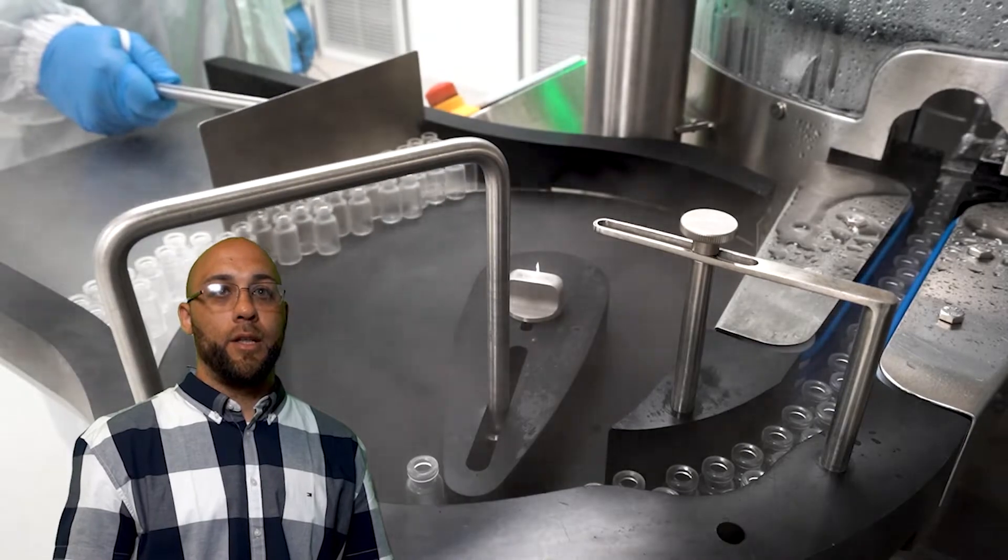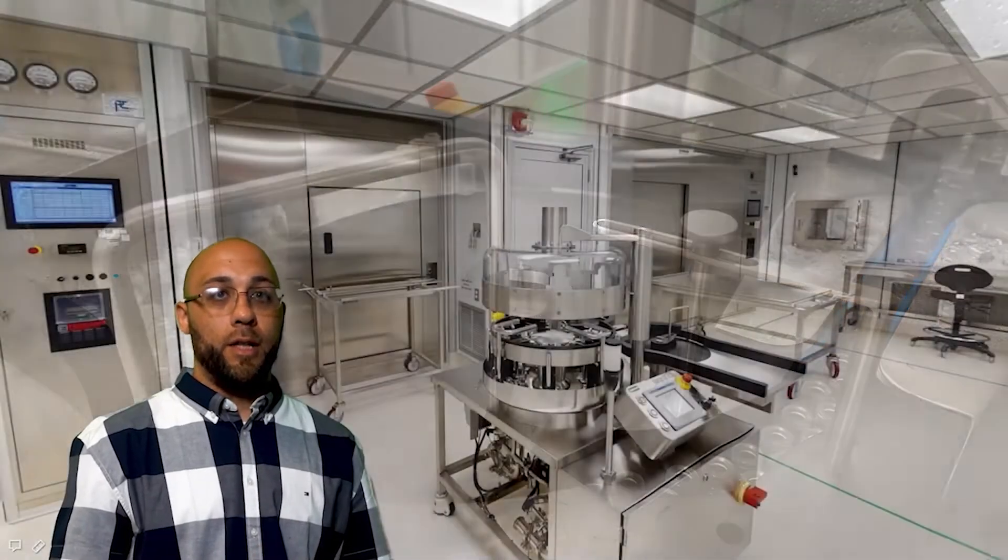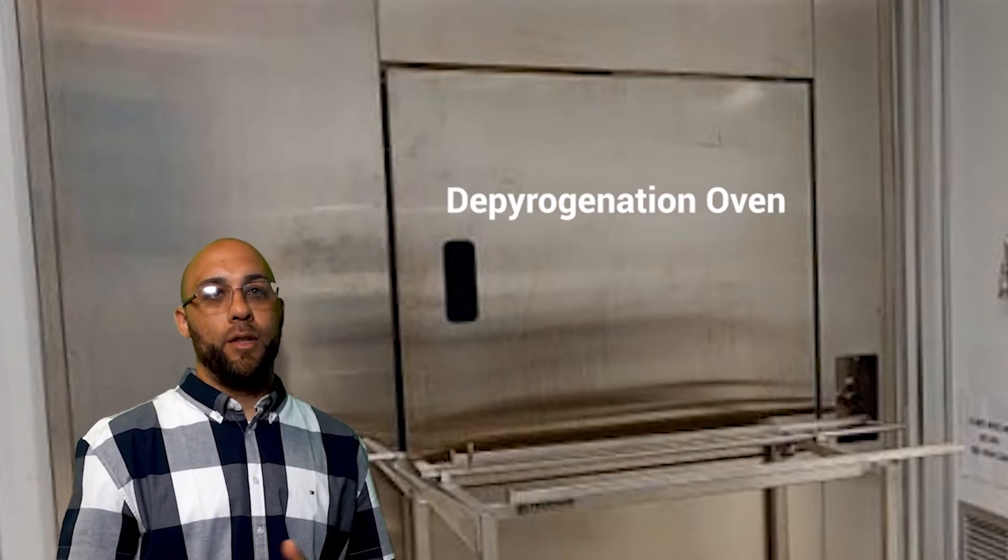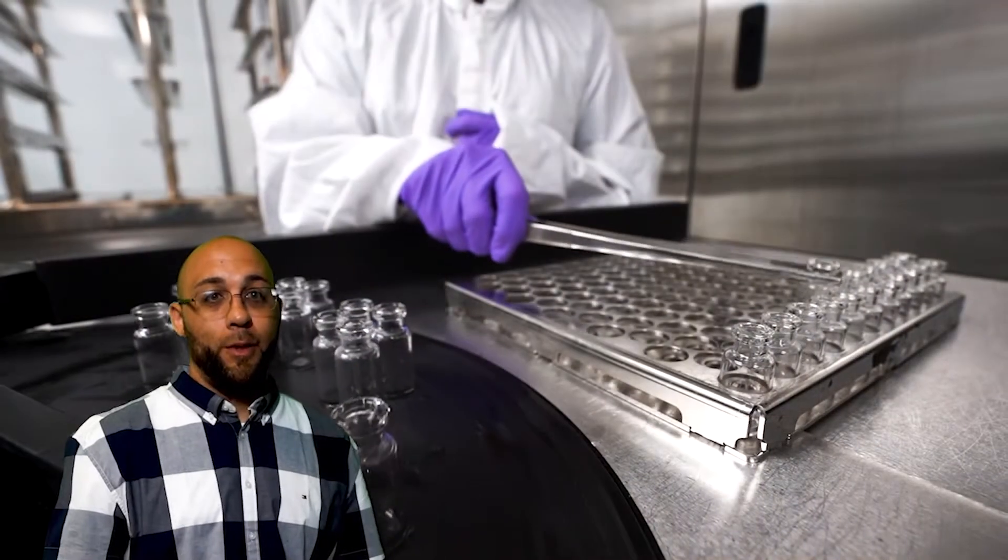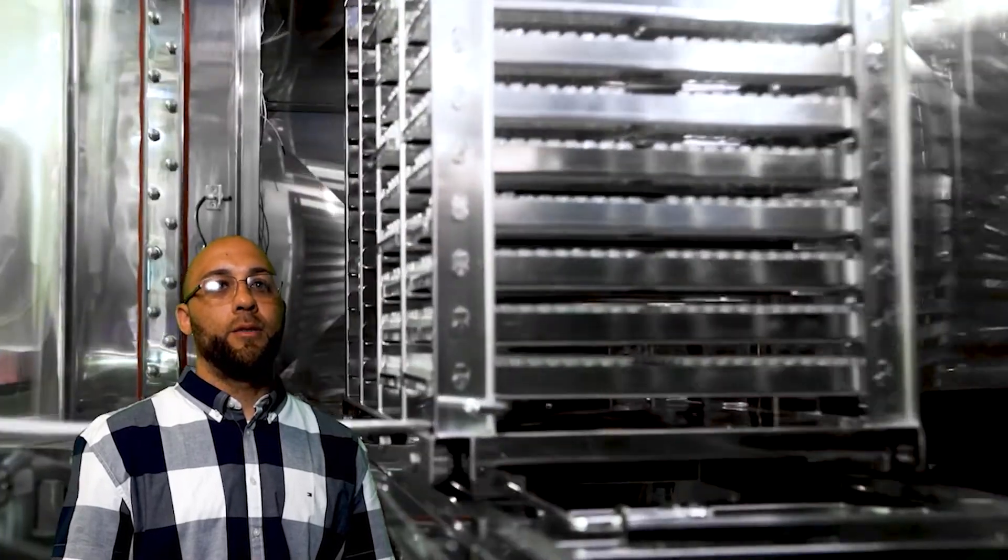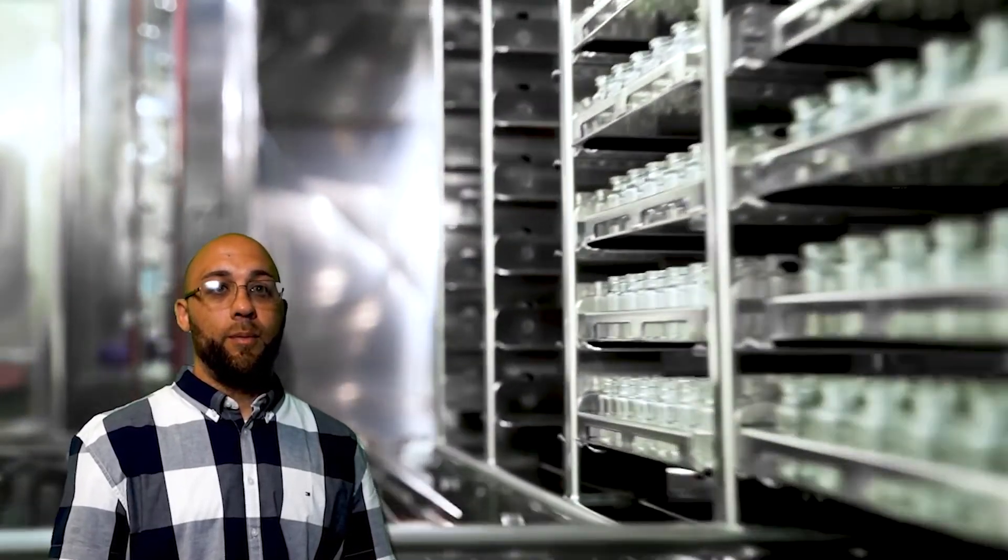We also wash and sterilize vials here. The vials enter the depyrogenation oven, which offers the same level of sterilization as the autoclave, only using dry heat. Our job is to ensure we have all the materials we need to complete the fill ready to go, so there are no delays, and to ensure that the products we make are sterile, so we can keep patients healthy.